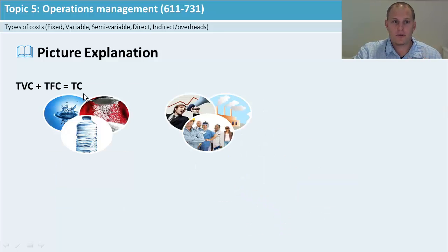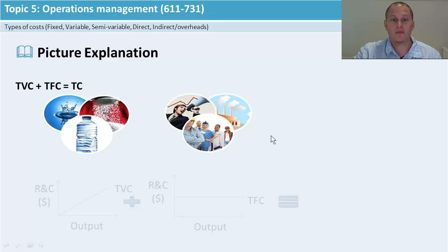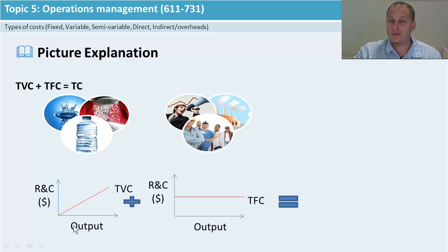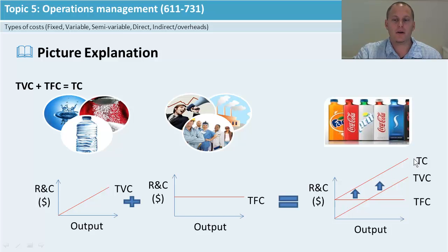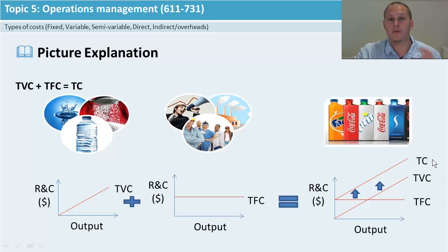If you put it all together to get TC, or total costs — taking your bottle, water, sugar, marketing, full-time wages, and factory — you're going to have two line graphs: total variable costs and total fixed costs. When you add them together you get total cost. The line goes up — the variable part is where it starts, and when you add on your fixed costs that's where the line starts going up. Just note: TFC, then TVC, then TC for total cost when you combine them.